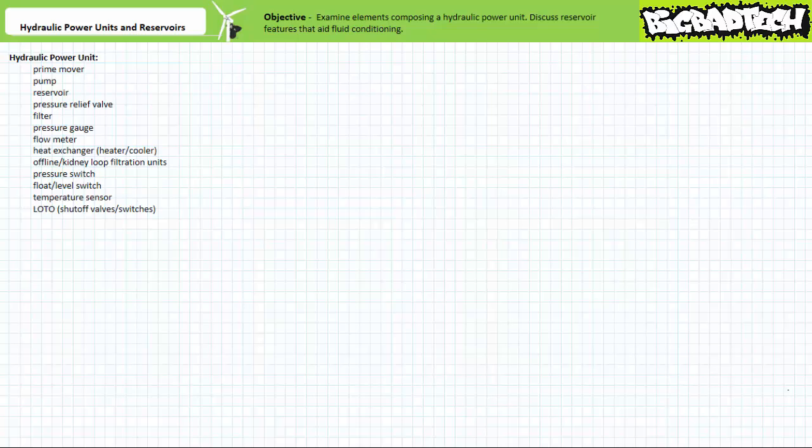Central to the proper operation of all hydraulic systems are those components that source flow and condition fluid. At a basic level, a hydraulic power unit, sometimes called a hydraulic power pack, consists of a prime mover, a pump, and a reservoir. Additionally, most hydraulic power units include a pressure relief valve and a means of filtration since these components are essential to the safe and efficient operation of the larger system.